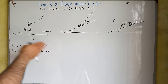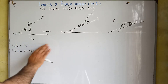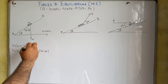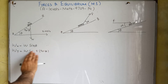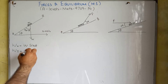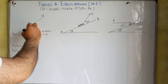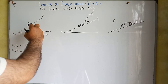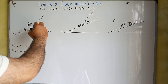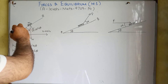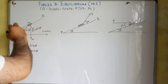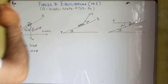We know that cos(90 − theta) is equal to sin theta. So the horizontal component will become W sin theta and the vertical component of weight is W cos theta. This vertical component of weight is W cos theta, and the horizontal component of weight is W sin theta.